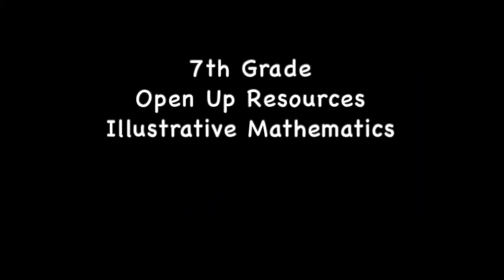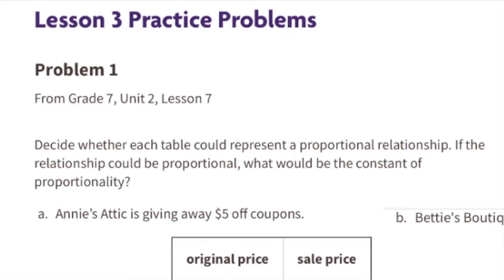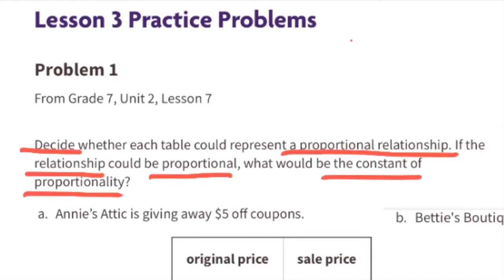7th grade Open Up Resources Illustrative Mathematics, Unit 5 Lesson 3, Changing Elevation. Problem number one is from 7th grade Unit 2 Lesson 7: decide whether each table could represent a proportional relationship. If the relationship could be proportional, what would be the constant of proportionality?